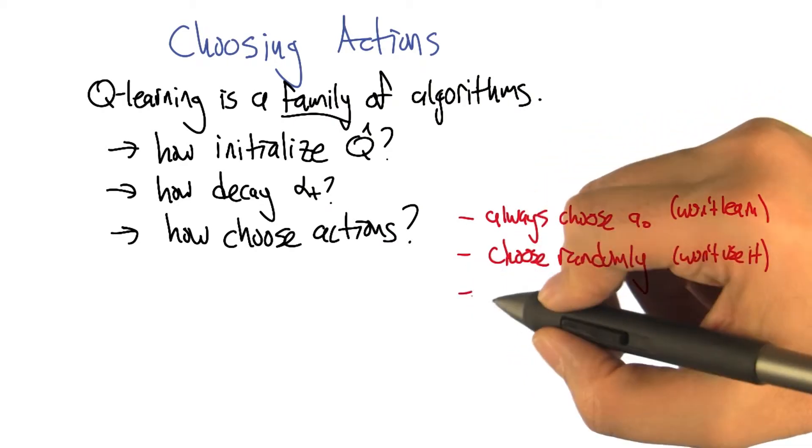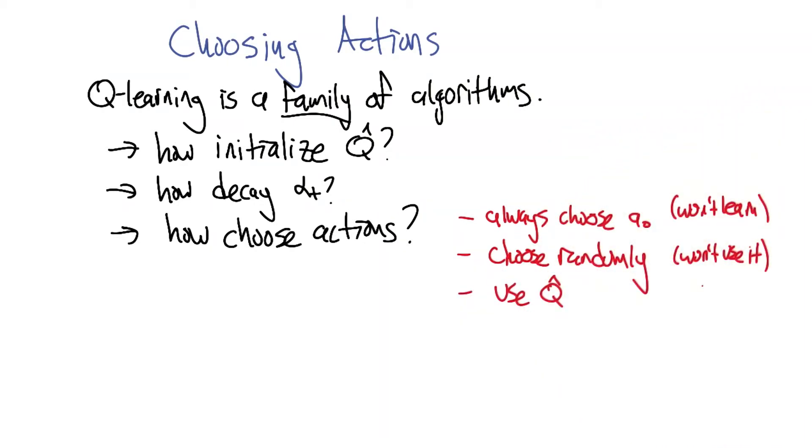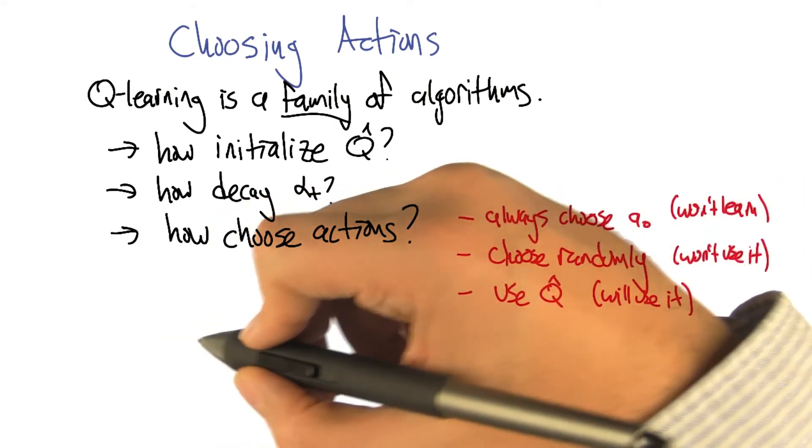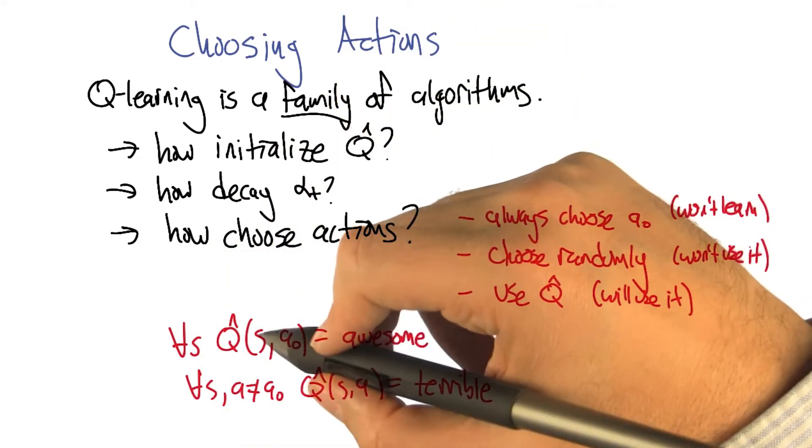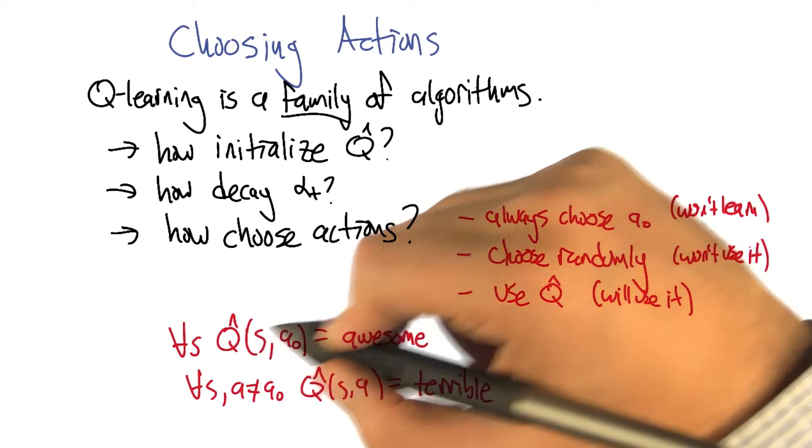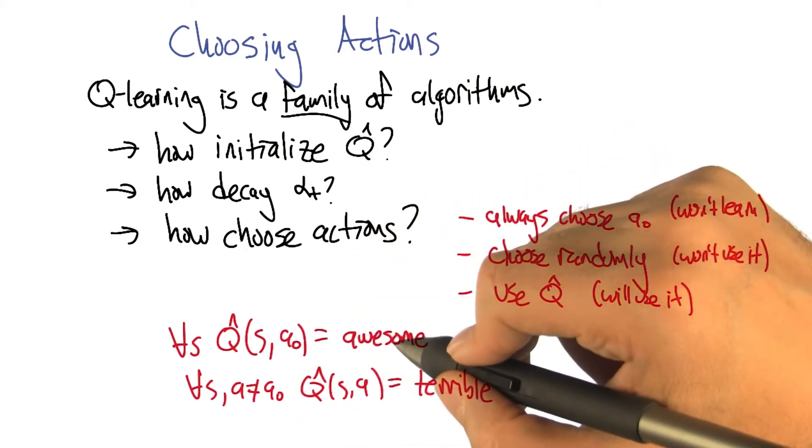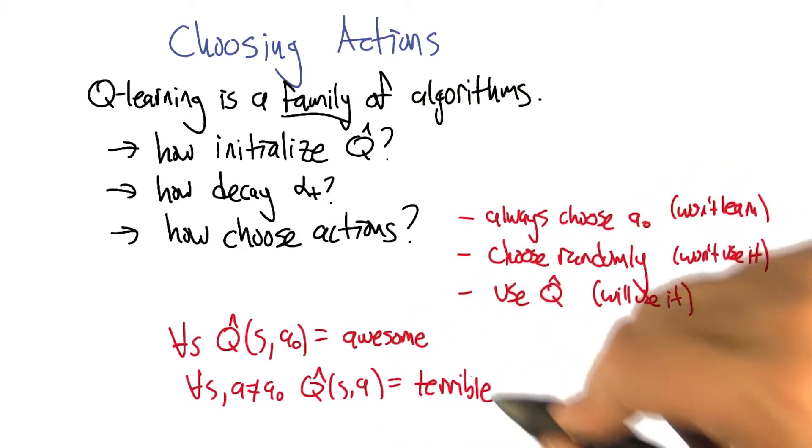All right, so then you had another idea, which was to use our estimate to choose actions. Yeah. And that seems like a good idea, in that we will use it. Is it possible that it won't learn? Well, it'll learn something. Well, yeah. It might not learn anything all that good though. So, for example, what if we do something like this? We initialize, now we're back up to this first point here. We initialize the estimate Q hat, so that for every state, A0 looks awesome. And all the other actions look terrible.